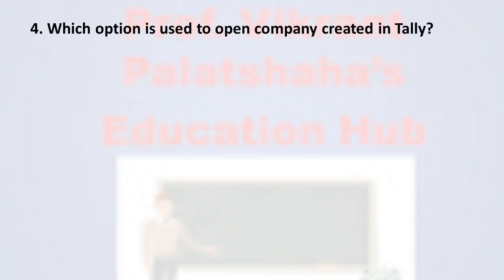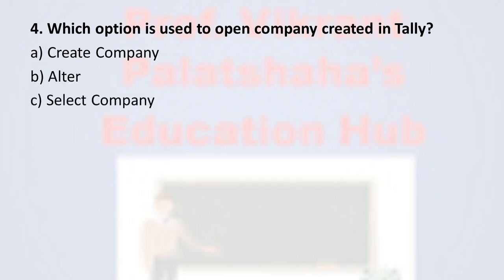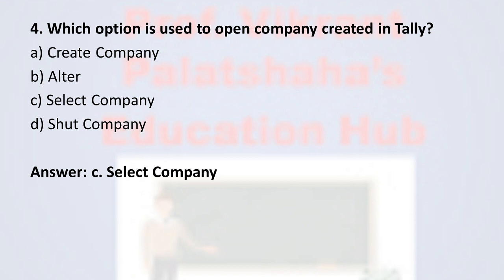Question number four: Which option is used to open a company created in Tally? Option A: Create Company, Option B: Alter, Option C: Select Company, Option D: Shut Company. The correct option is Option C, Select Company. To open a created company in Tally, the user has to select the option called Select Company, therefore the correct answer is Option C.